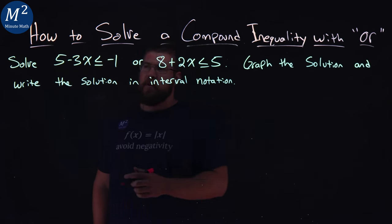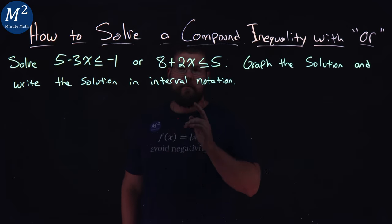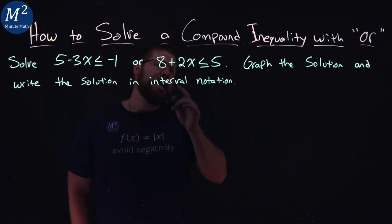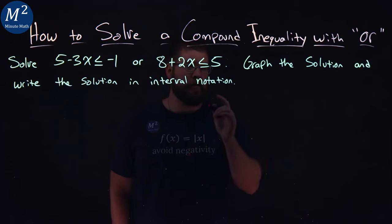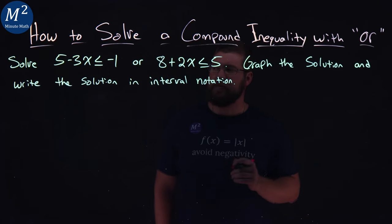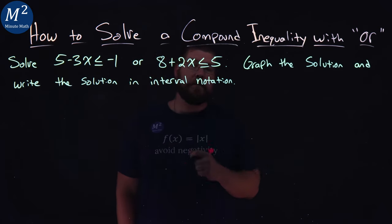Our problem here is: solve 5 minus 3x is less than or equal to negative 1, or 8 plus 2x is less than or equal to 5. Graph the solution and write the solution in interval notation.